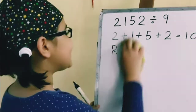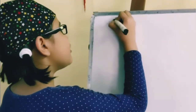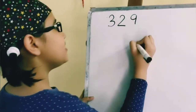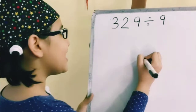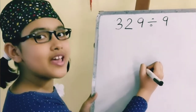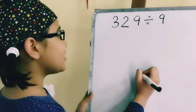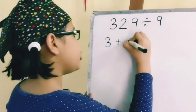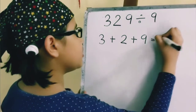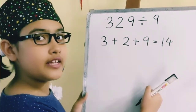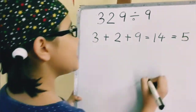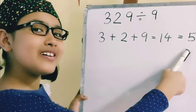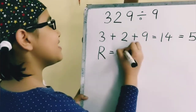Easy? Let's check another number: 3, 2, 9 divided by 9. As we know, our first step is to do the digit sum. So, 3 plus 2 plus 9 is equal to 14. Now, we have to do the digit sum of 14. So, 1 plus 4 is equal to 5. So, we get the remainder as 5.